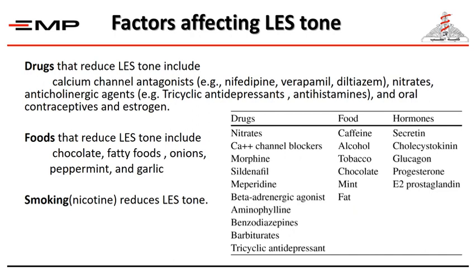Many factors affect lower esophageal sphincter tone. Drugs that reduce LES tone include calcium channel antagonists like nifedipine, nitrates, anticholinergic agents, and oral contraceptives and estrogen. Some foods also contribute to lowering of the sphincter, including chocolate, fatty foods, and onions. An important contributing factor to sphincter relaxation is smoking.